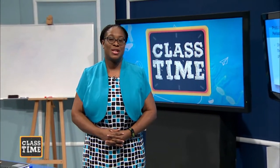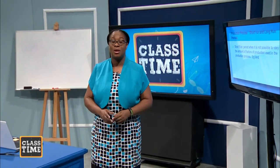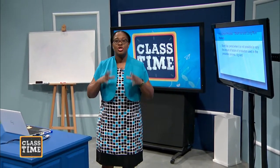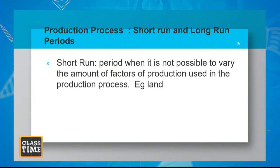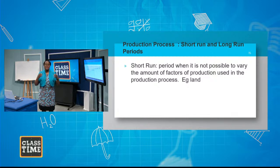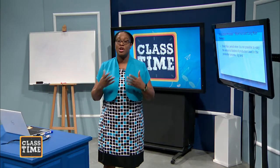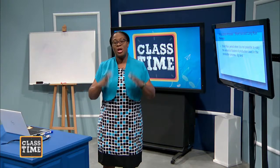Welcome back. Just before the break we were looking at short-term and long-term. Short-term refers to the period where it is not possible to vary the factors of production used in the production process — for example, your land space or factory space when just starting up the business, it's fixed. In the long run, the capacity of the firm increases over time and all inputs are variable.